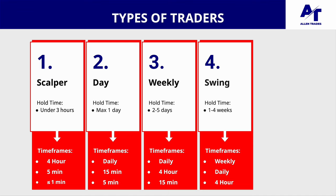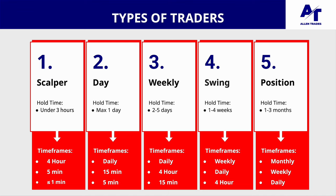The fifth and final type of trader is position traders. For position traders, you're usually holding around one to three months — essentially holding for a quarter. So if you enter a trade in March, the start of quarter two, you're looking to get out somewhere between April, May, even June, pushing into quarter three. The timeframes used for position trades are the monthly, the weekly, and the daily for the entry.